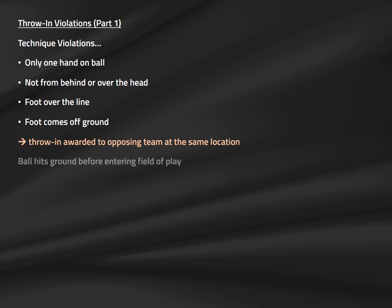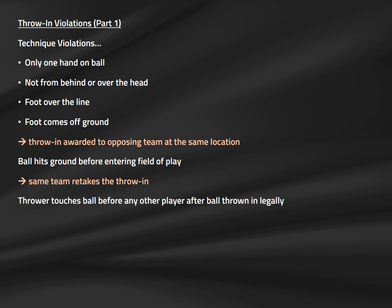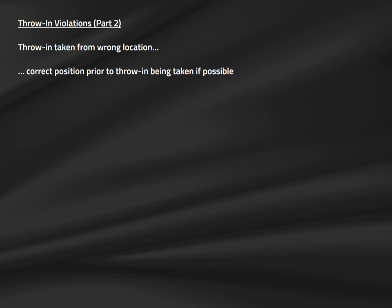If the ball leaves the thrower's hands and never breaks the plane of the touch line, or hits the ground before entering the field of play, the ball has not been properly put into play and the throw-in should be retaken by the same team. If the ball is touched again by the thrower without another player touching it, this is a double-touch infraction and an indirect free kick is awarded to the opposing team. If a player attempts a throw-in from more than about one yard from where the ball left the field, the referee crew should intervene before the throw is taken.